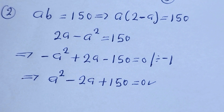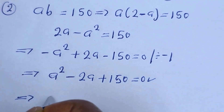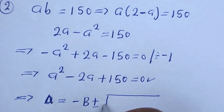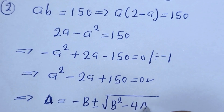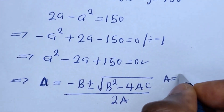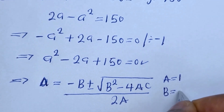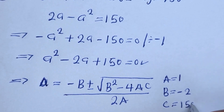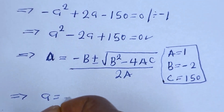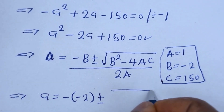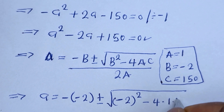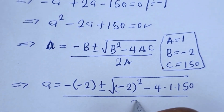This is a quadratic equation. Let us solve this using the quadratic general formula: A is equal to minus B plus or minus square root of (B squared minus 4AC), over 2A. Therefore, from this equation, A is equal to 1, B is equal to minus 2, C is equal to 150. Substituting: A is equal to minus(minus 2) plus or minus square root of (minus 2) squared minus 4 multiplied by 1 multiplied by 150, over 2 multiplied by 1.